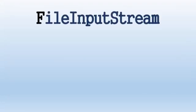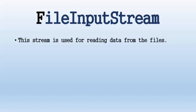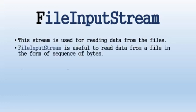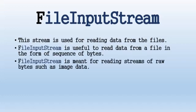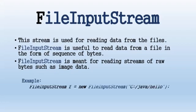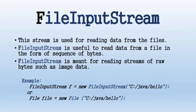FileInputStream is useful to read data from a file in the form of a sequence of bytes. FileInputStream is meant for reading streams of raw bytes such as image data. Objects can be created using the keyword new. For example, object f is declared and instantiated using FileInputStream and its corresponding constructor. The constructor takes a file name as a string to create an input stream object to read.